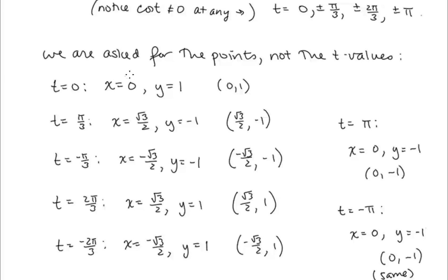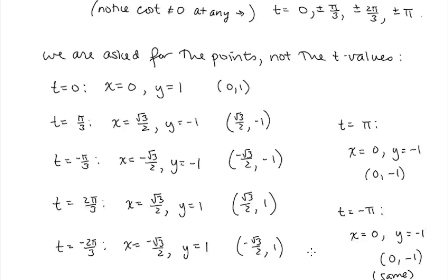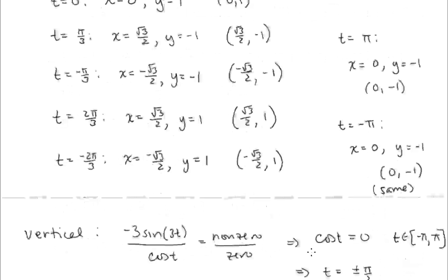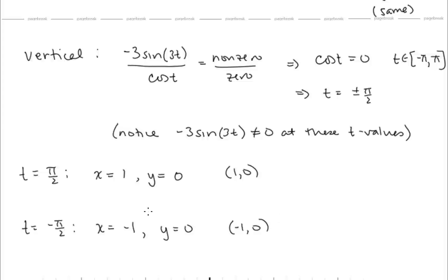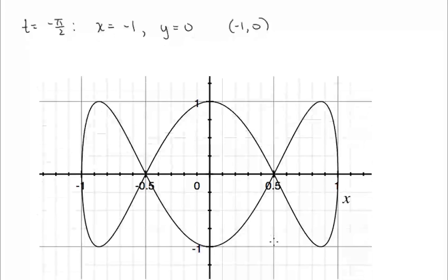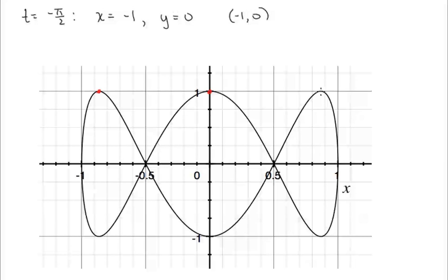Plugging t values into x equals sine t and y equals cosine 3t gives all horizontal tangent points. For vertical tangency, set cosine t equal to zero over the interval negative pi to pi: this gives t equals plus or minus pi/2. The numerator is non-zero there, confirming vertical tangents. The corresponding points are (1, 0) and (negative 1, 0). The graph shows all six horizontal tangent points and the two vertical tangent points.